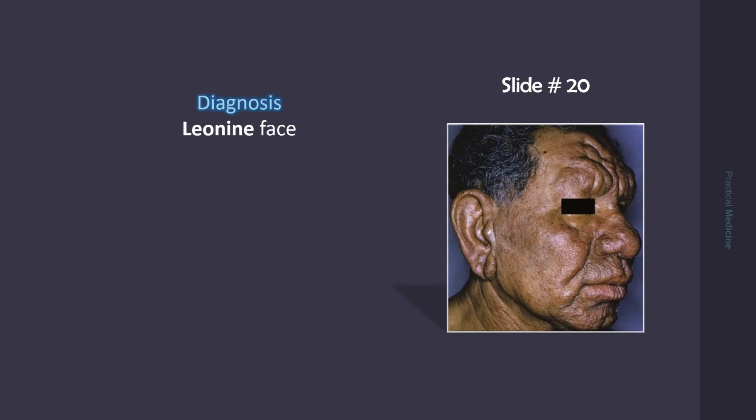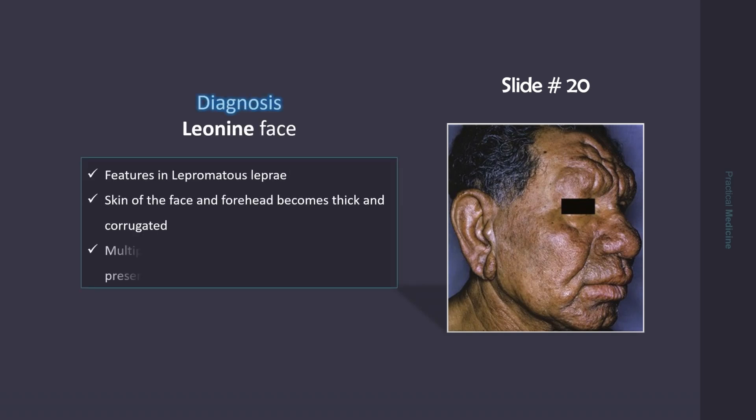This is leonine facies. It is seen in lepromatous leprosy. The skin of the face and forehead becomes thick and corrugated. Multiple nodules of variable sizes and shapes are present on the ear lobules, face, and nose.